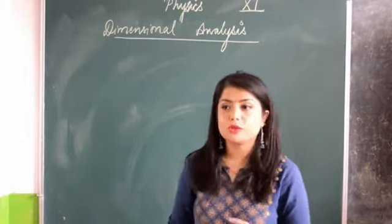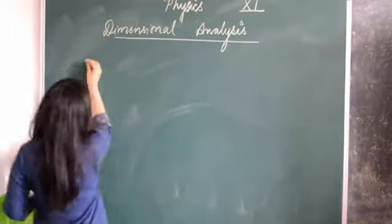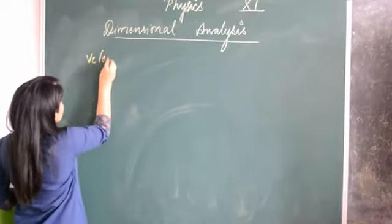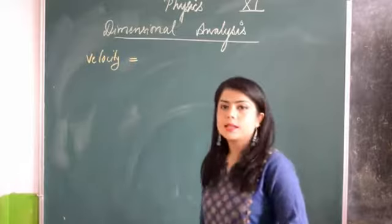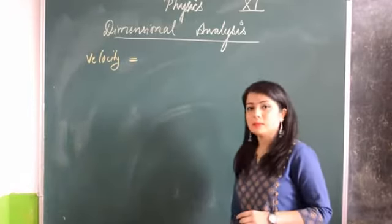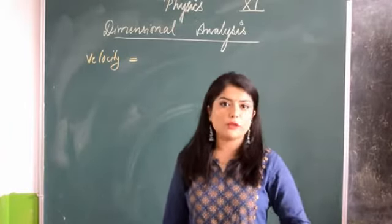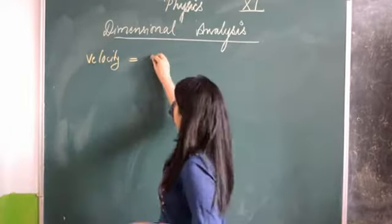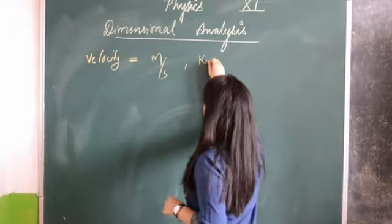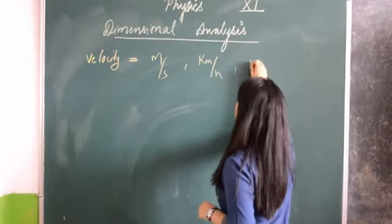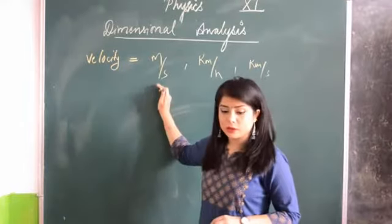To make it more clear, I will take the example of velocity. The formula of velocity is displacement by time. The SI unit of velocity is meter per second. Another unit is kilometer per hour, or you can also write kilometer per second. Every unit is correct. This is the SI unit.